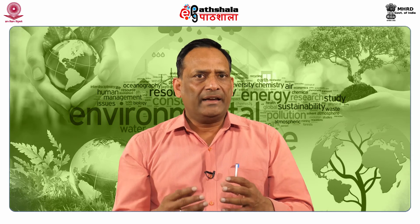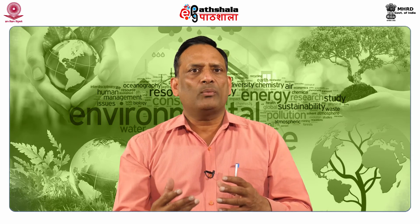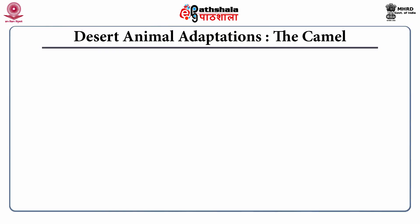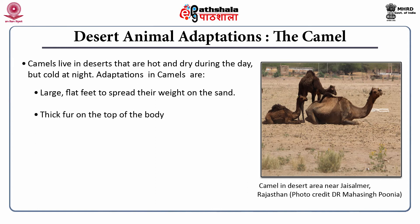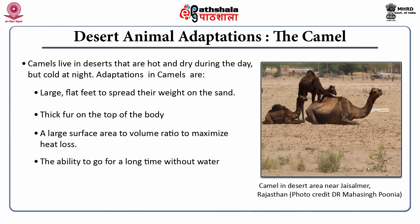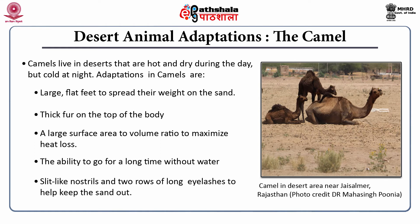The camel is another example. Camels live in deserts that are hot and dry during the day but cold at night. Their adaptations include: large flat feet to spread their weight on the sand, thick fur on the top of the body, a large surface area to volume ratio to maximize heat loss, the ability to go for a long time without water, and slit-like nostrils and two rows of long eyelashes to help keep sand out.